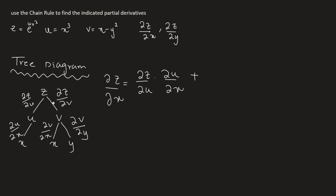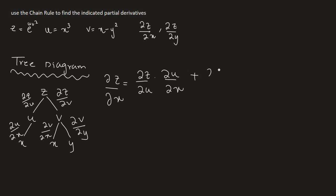Every time we go to the other branch, we write a plus. We are done with the first branch, and now we write about the second branch — the derivative of z with respect to v times the derivative of v with respect to x. So this is the formula we have created to calculate the partial derivative of z with respect to x.